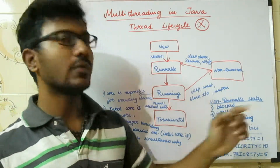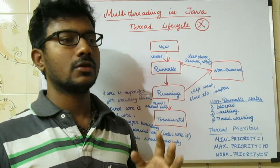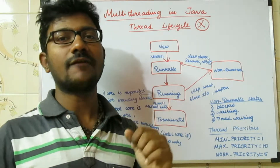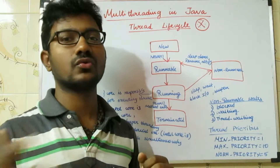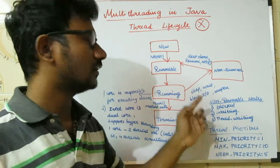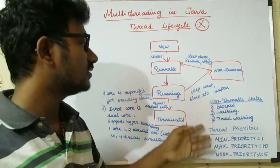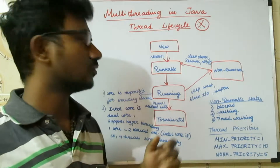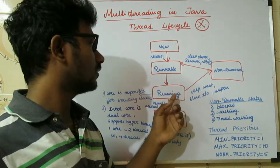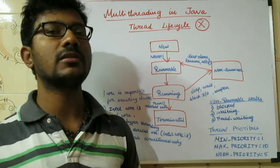That is called the Waiting stage. And then there is Timed Waiting — Timed Waiting means for a particular time you are saying that you can wait only for a few minutes, and after that you will use that resource. So that is called Timed Waiting. These are the three basic scenarios where a thread moves from Running to Non-Runnable state.